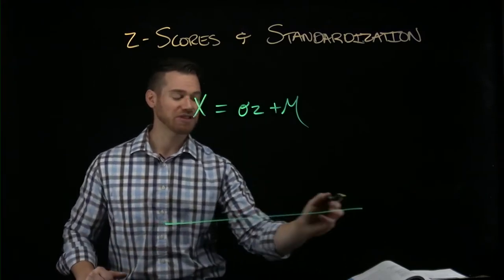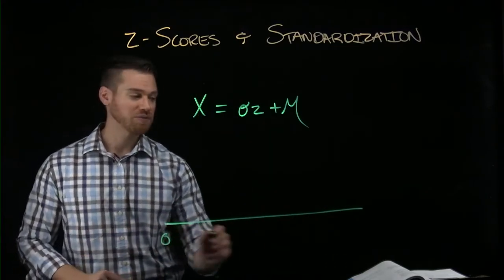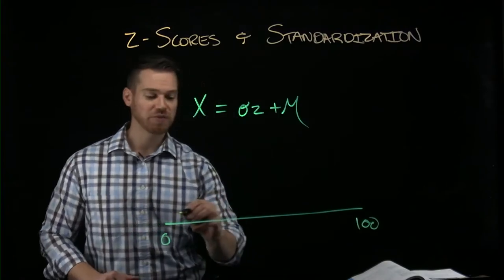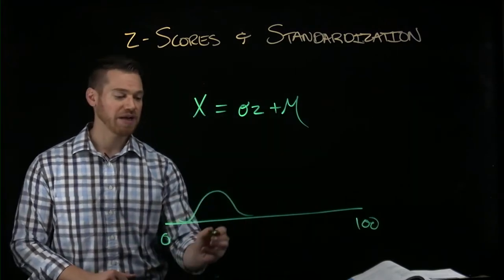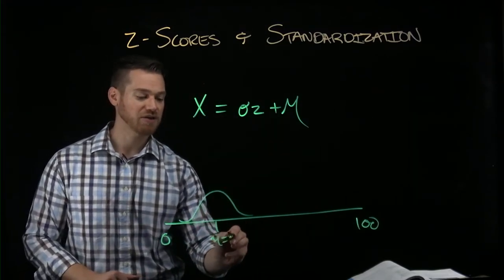So if you imagine a distribution sitting along a number scale from zero to 100 and the distribution has a certain shape, right, and maybe that makes its mean here, 15.